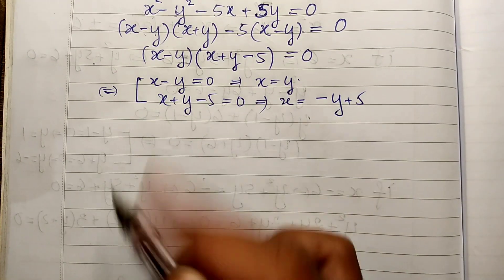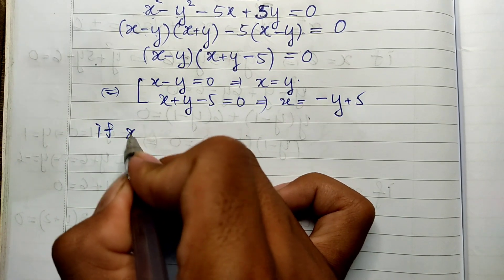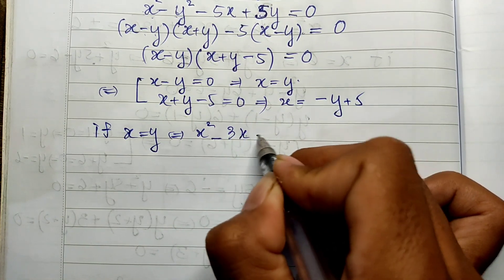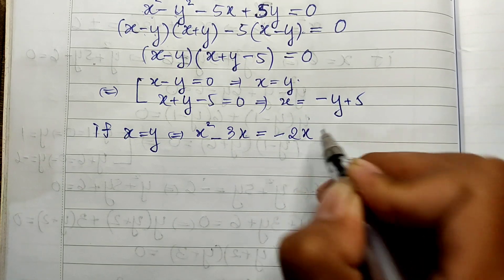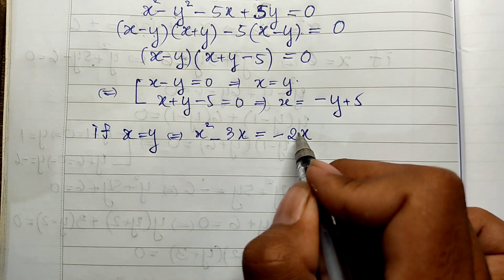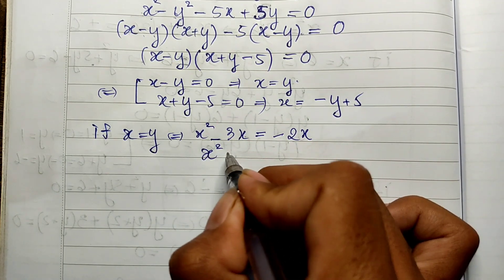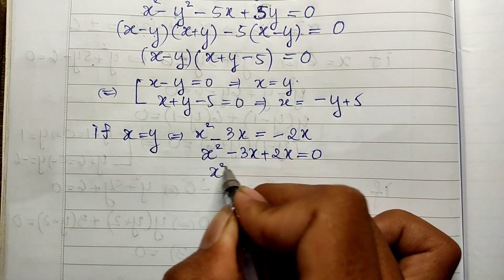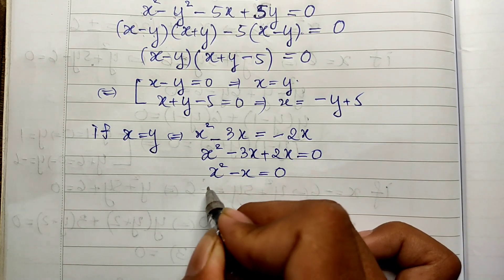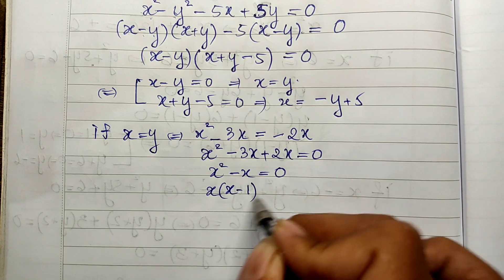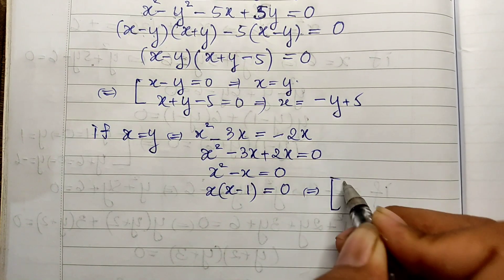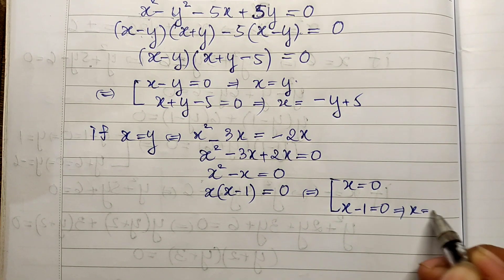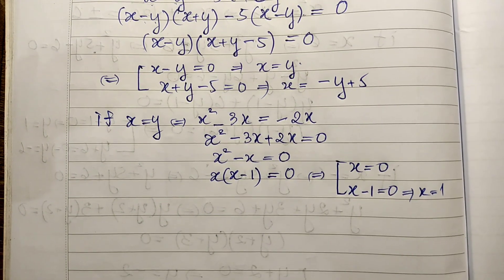Case 1: if x equals y, substituting into the first equation gives x squared minus 3x equals minus 2x. Moving minus 2x to the left side gives x squared minus x equals 0, so x times (x minus 1) equals 0. Therefore x equals 0 or x equals 1. Since x equals y, our solutions from this case are (0, 0) and (1, 1).